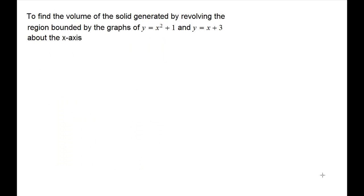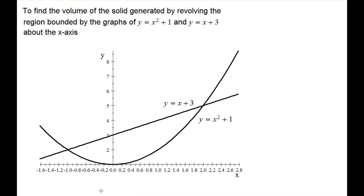Now we will apply the washer method to obtain the volume of the solid that's generated by revolving the region bounded by the graphs of these two functions. So what we do first is we graph these two functions and note that this is the region that we are going to revolve. Note that the two curves intersect at negative 1, 2, and 2, 5 and have to be revolved around the x-axis.